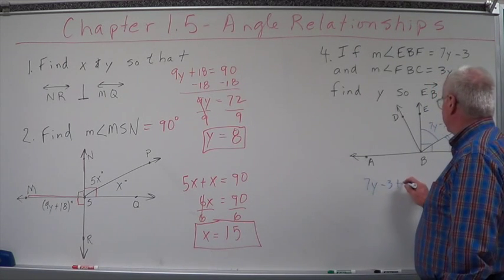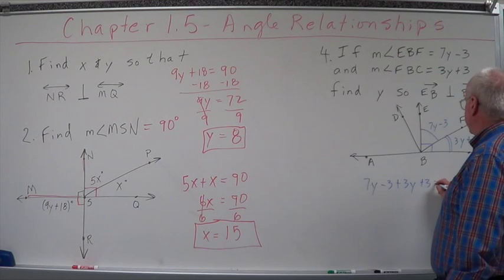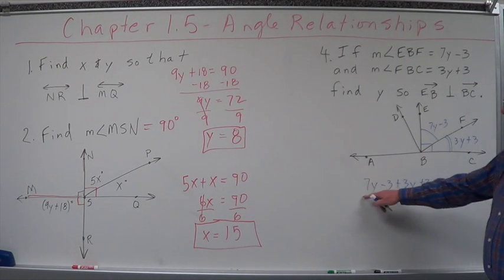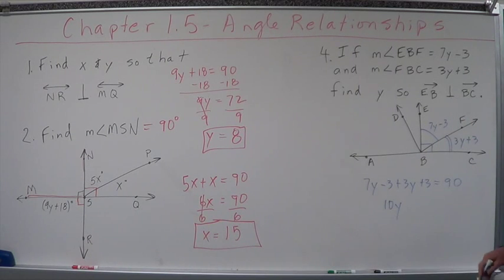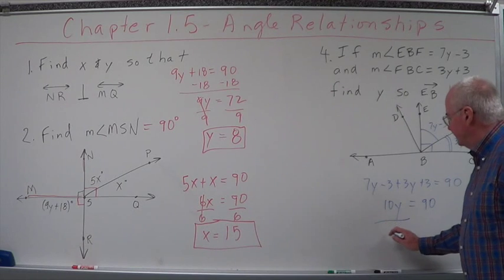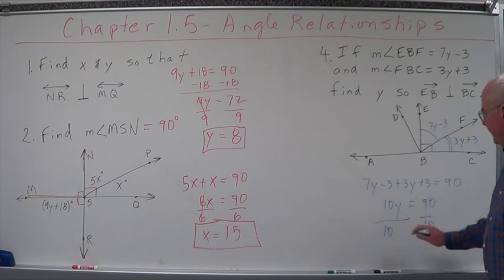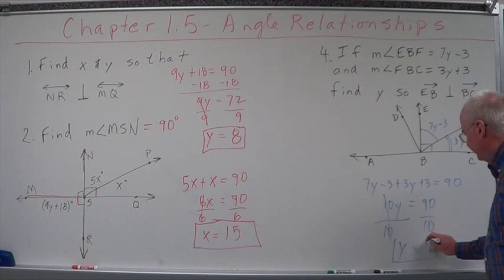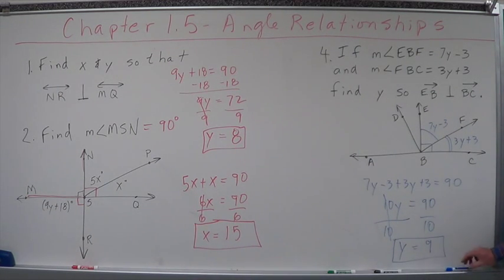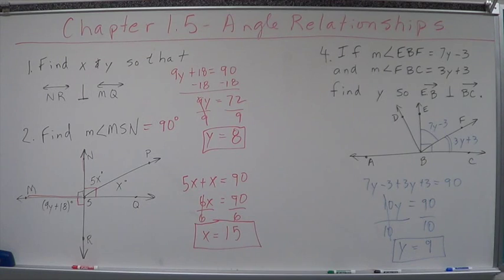So: 7y minus 3 plus 3y plus 3 equals 90. Combine like terms — 7y and 3y gives 10y, and negative 3 plus positive 3 is 0. So 10y equals 90. Divide by 10 — y equals 9. That's two sample problems using the angle relationships we have. That's why I say geometry is only algebra with pictures. The pictures and the rules on how they relate set up the relationships for us to do algebra. Welcome to angle relationships.